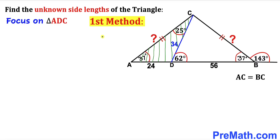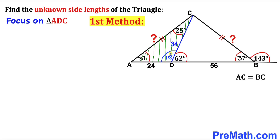Here's our next step — a very fast method. Let's focus on triangle ADC. Looking at the straight angle of 180 degrees, we know that one part is 62 degrees, so therefore the remaining angle has got to be 118 degrees.